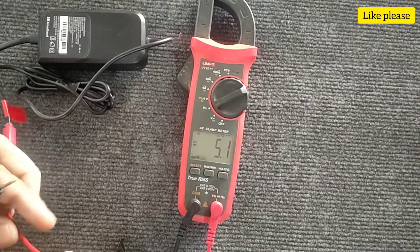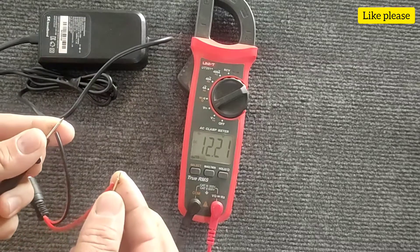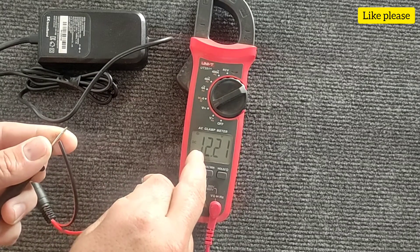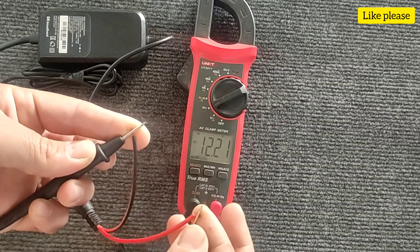Then we measure the voltage. If the voltage sign is positive, it means that the wire connected to the black probe is negative and the other wire is positive.